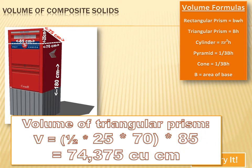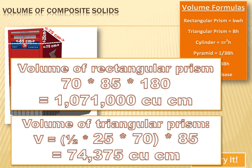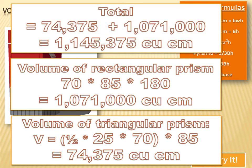Now, for the rectangular prism, that's 70 times 85 times 180, the base times the width times the height. And that equals 1,071,000 cubic centimeters. Now, all that's left to do is add those two numbers together, and I get 1,145,375 cubic centimeters.